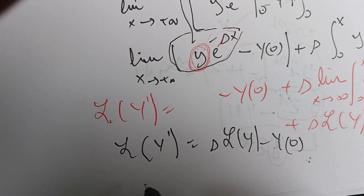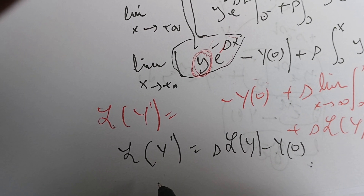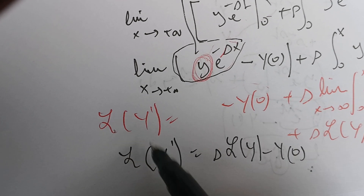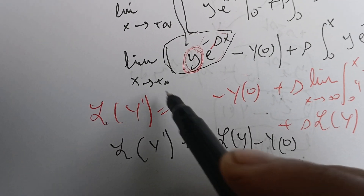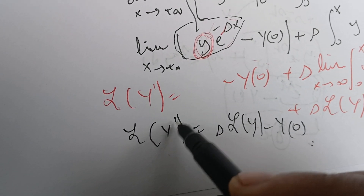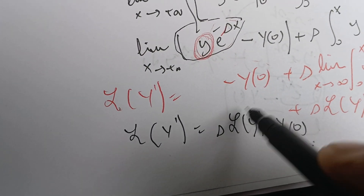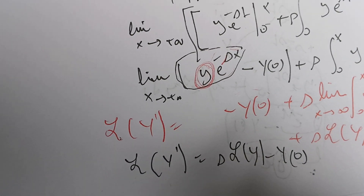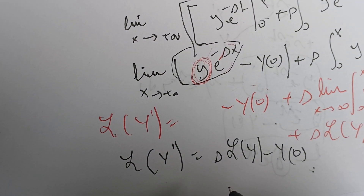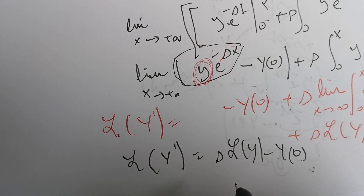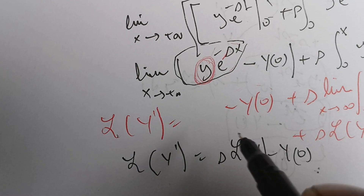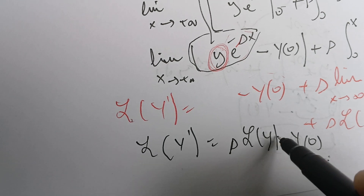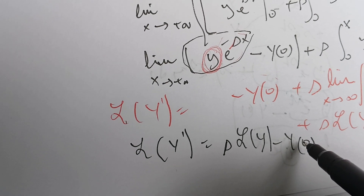This tells us that we can transform a differential equation — something involving Y prime — into the Laplace of Y, and we know how to compute Laplace transforms of functions, not of their derivatives. This proves that the Laplace of Y prime equals S times L{Y} minus Y(0).